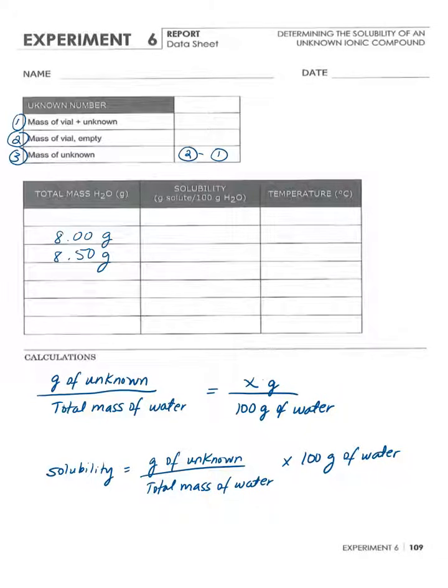To find the mass of the unknown, subtract the mass of the empty vial from the mass of the vial with the unknown. That will give you the mass of the unknown solid used for the experiment.